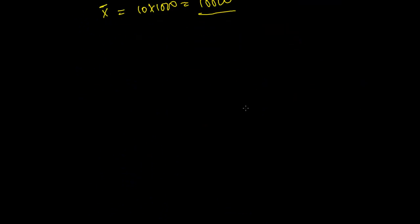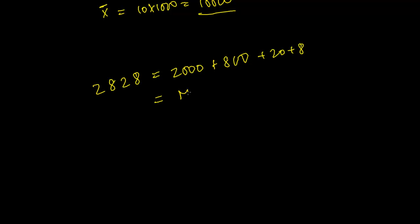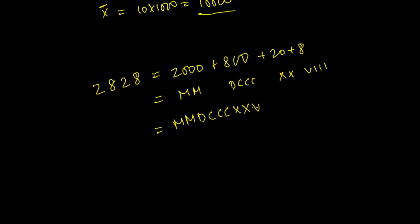Let's practice. To write 2828: break it into parts — 2000 is MM, 800 is DCCC, 20 is XX, and 8 is VIII. Combining everything gives MMDCCCXXVIII. Writing such large numbers is quite complex, which is why we use modern notation today.